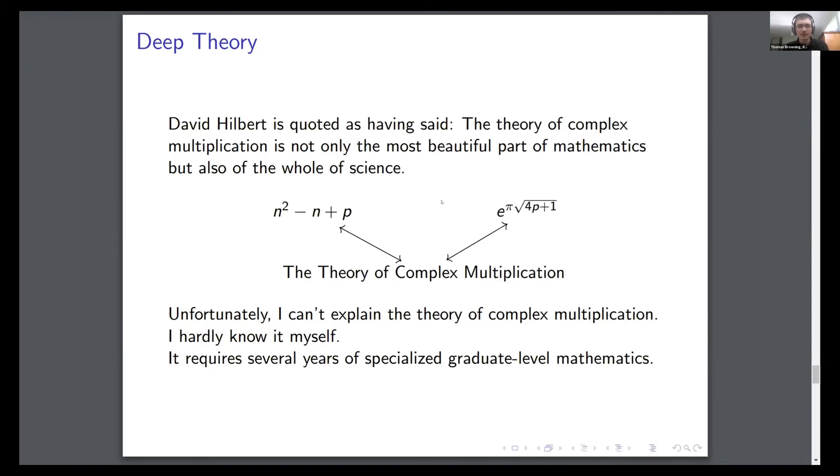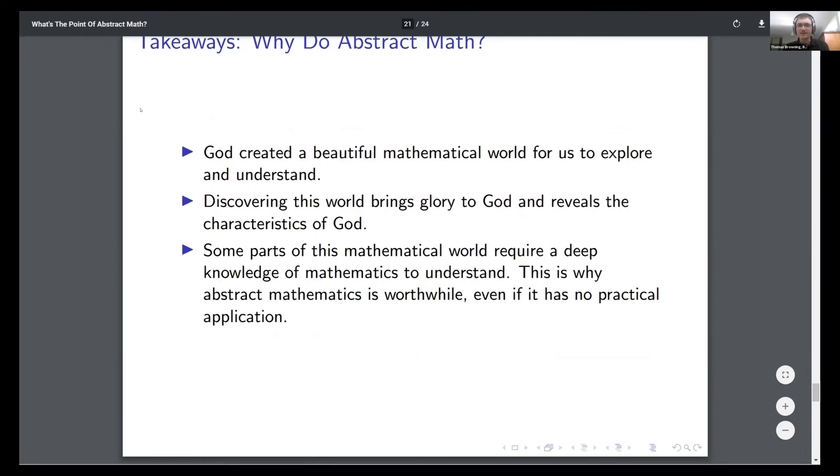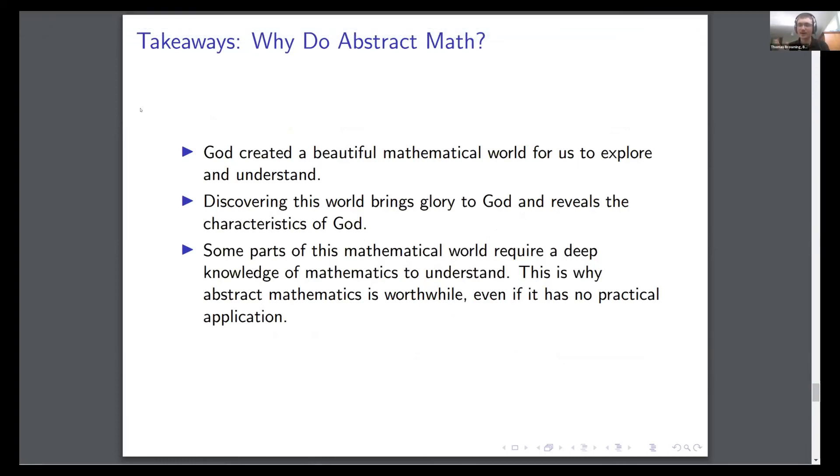And that's where I want to leave the mathematical portion - this example where you've got some really deep beautiful thing in mathematics that understanding and appreciating the beauty requires a deep knowledge of abstract mathematics. So now I'll move to the theological portion. There is real beauty in mathematics, and there's this parallel between the natural world and the mathematical world, and the mathematical world does have real beauty that we can explore and understand. Discovering this beauty, I think, brings glory to God and also reveals some of the characteristics of God. Seeing these cool coincidences and lovely things in mathematics maybe help you understand and appreciate God's ingenuity and sense of humor. But the interesting thing about this example I just showed is that some of this beauty in mathematics requires a deep knowledge of mathematics. And I think this is why, at least to me, abstract mathematics is worthwhile, because it allows me to understand some deep aspects of God's creation that I couldn't otherwise understand. There's some deep stuff in God's creation that you really have to know your field to fully appreciate and understand.